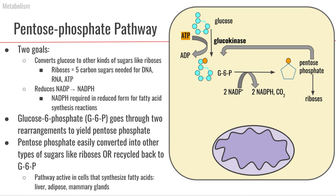One of the products that comes out of the pentose phosphate pathway is the production of riboses. Riboses are a type of five-carbon monosaccharide that are one of the important building blocks when we're making DNA, RNA, and ATP. So a cell may want to run the pentose phosphate pathway in order to produce riboses.